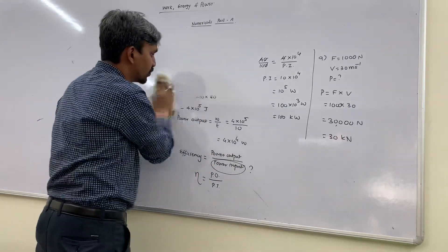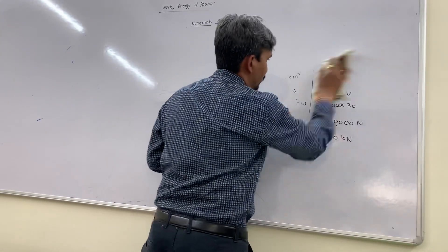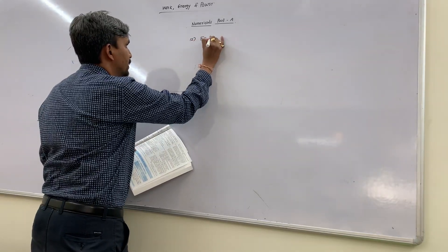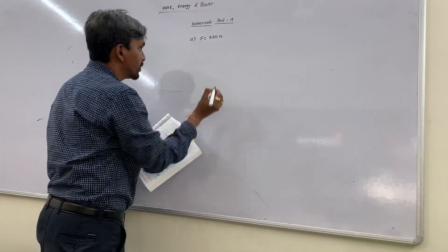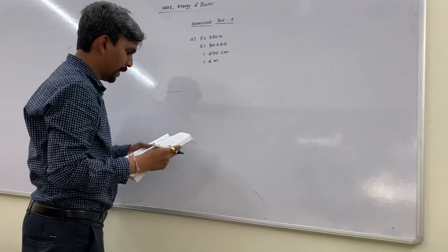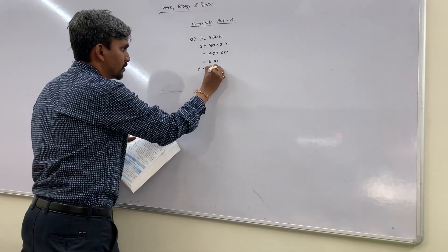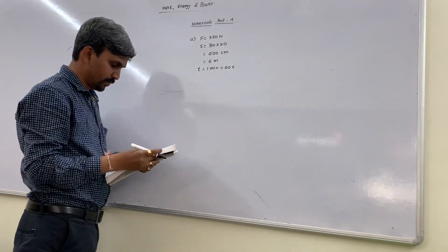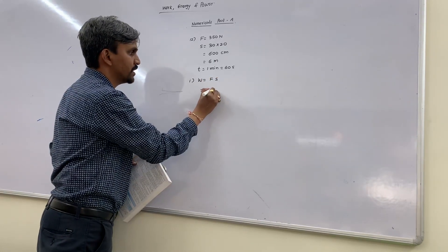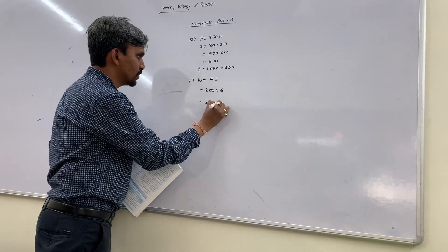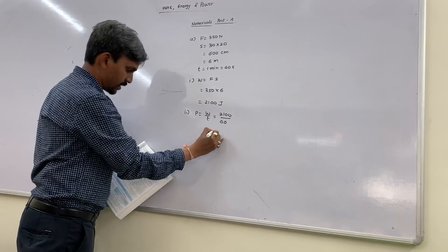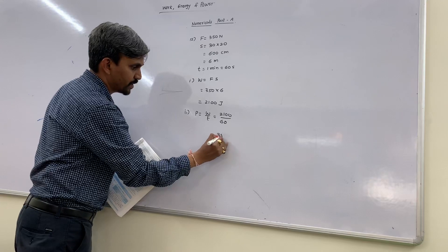Twelfth numerical: a boy weighing 350 Newton climbs 30 steps, each of 20 cm, so displacement = 30 × 20 cm = 600 cm = 6 meters. Time is given as 1 minute = 60 seconds. Work done = F × S = 350 × 6 = 2100 Joules. Power = work / time = 2100 / 60 = 35 Watts.